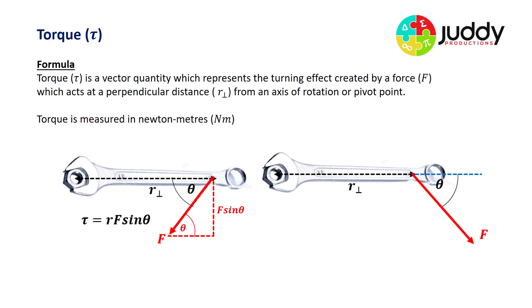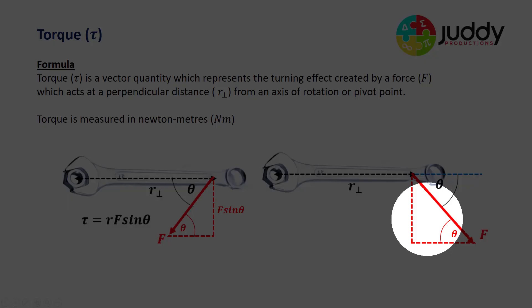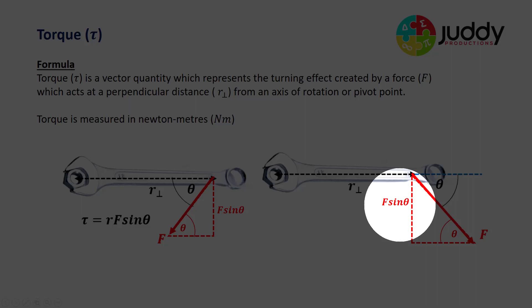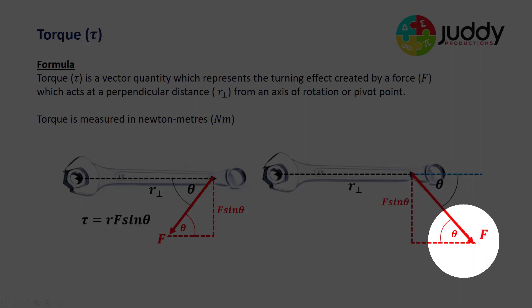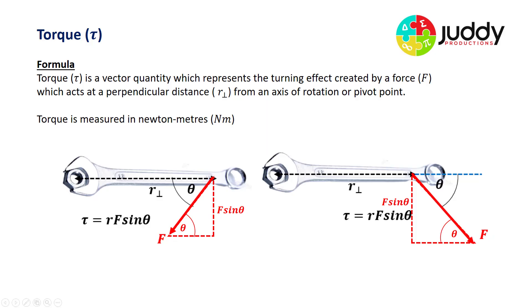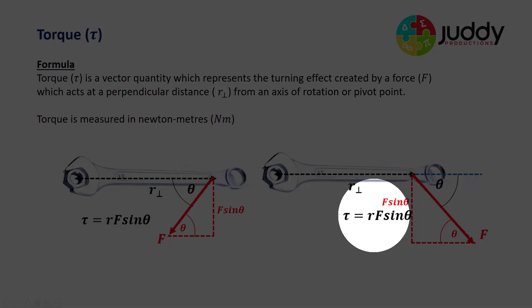In the second scenario we get exactly the same effect: a force not perpendicular to the radius is broken into its horizontal and vertical components. Using trigonometry, the opposite side is equal to F sin theta where F is the hypotenuse. So again the torque equals R times F times sine of the angle theta.